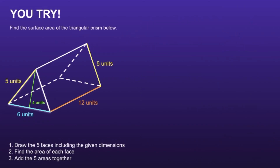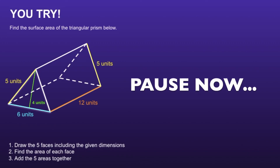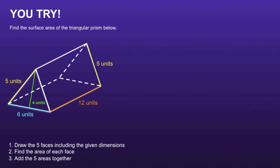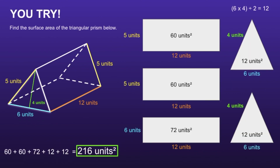Alright, I have one more problem I want you to try. Find the surface area of the triangular prism below. I would recommend you pause the video now, solve, and then resume when you're ready to see if your solution is correct. The surface area of the triangular prism is 216 units squared. If you had this incorrect, I would recommend you pause, review your work, and see if you can find your mistake.